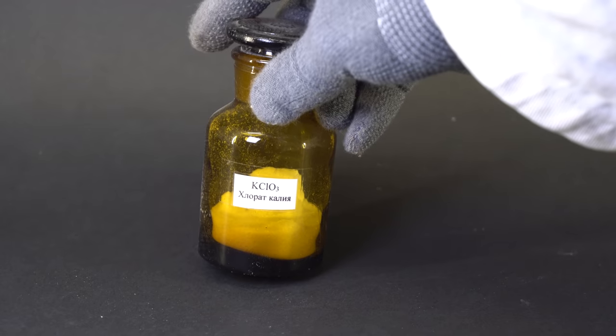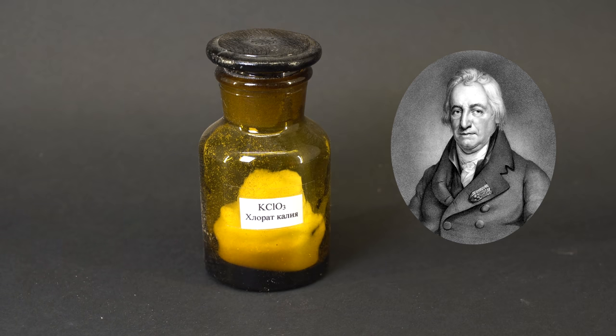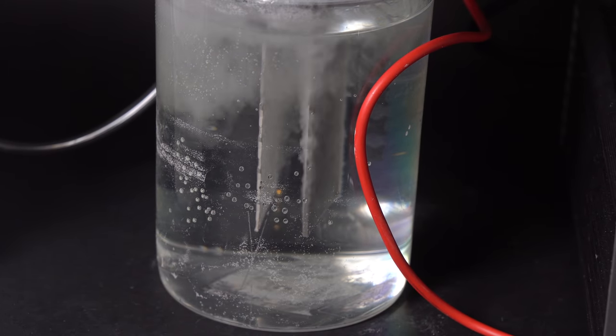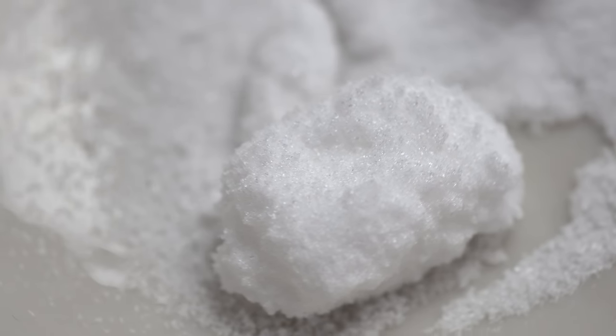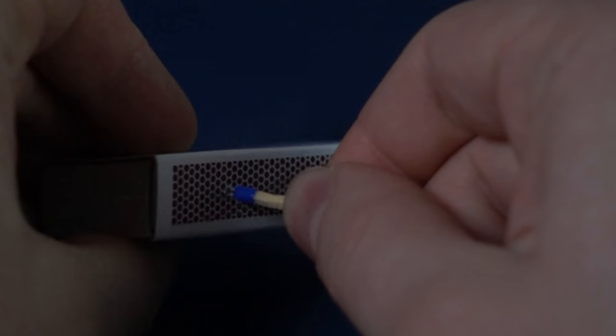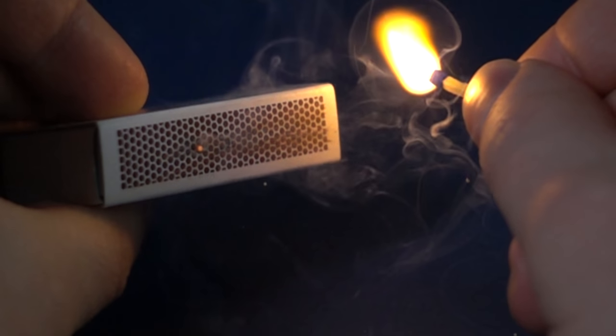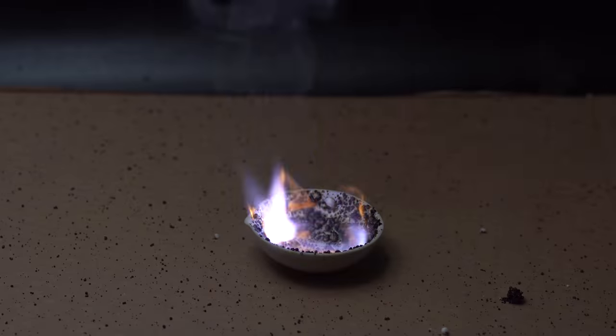Since we're talking about oxygen generators, I must mention kilograms of potassium chlorate hanging above airline passengers' heads. This chemical is also called Berthollet salt, named after French chemist Claude Berthollet. Nowadays this chemical is synthesized using electricity and potassium hydroxide solution. The obtained Berthollet salt is very chemically active and is used in pyrotechnics and match heads. Even sugar mixed with potassium chlorate turns into real rocket fuel.